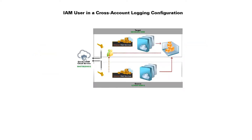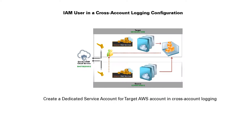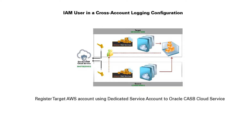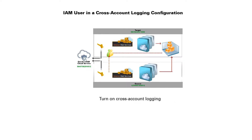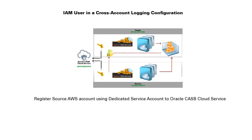For an IAM user in a cross-account logging configuration, you will need the following videos: Turn on CloudTrail and S3 in an AWS account; Create a dedicated service account for target AWS account in cross-account logging; Register target AWS account using dedicated service account to Oracle CASB Cloud Service; Create a dedicated service account for source AWS account in cross-account logging; Turn on cross-account logging in AWS; and Register source AWS account using dedicated service account to Oracle CASB Cloud Service.